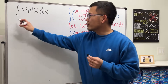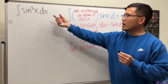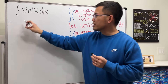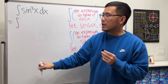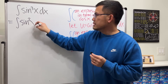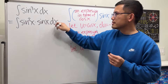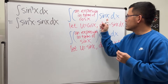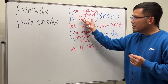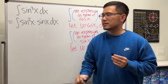Following this strategy, I want to pull one sine x factor out. We are looking at the integral and we break this down as sine squared x times sine x.